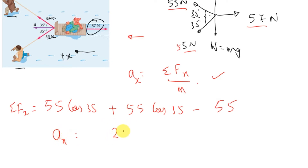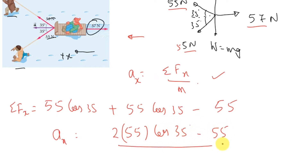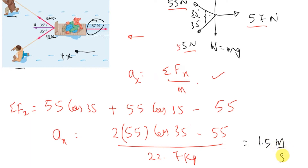Using Newton's second law, a_x equals the sum of forces in X divided by mass. The horizontal forces are two components of 55 cos(35°) forward minus 57 Newtons of friction. So a_x equals [2 × 55 cos(35°) − 57] divided by 22.7 kg. Using a calculator, the acceleration comes out to be 1.5 meters per second squared. This is the acceleration of the child and the sled.